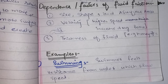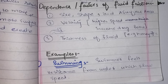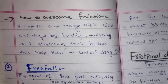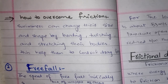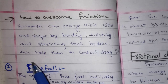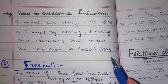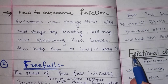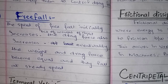The best example of fluid friction is swimming. When a swimmer moves through water, the water creates resistance that reduces the swimmer's speed. To overcome this friction, swimmers change their size and shape by bending, twisting, and stretching their body to control the drag force.